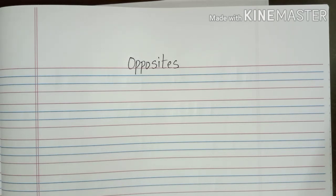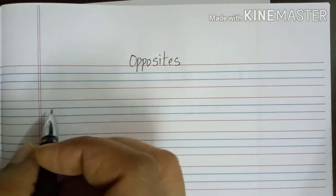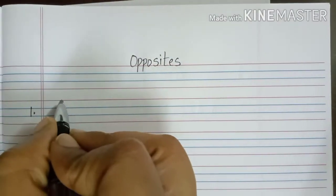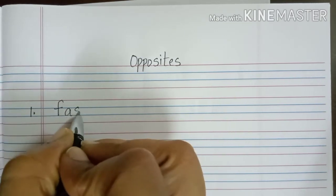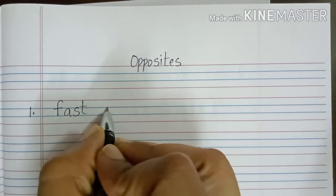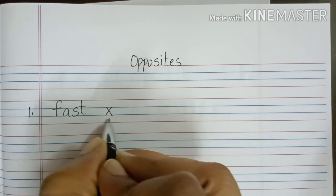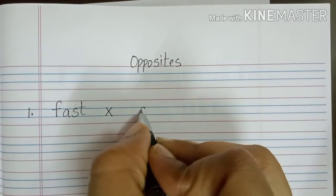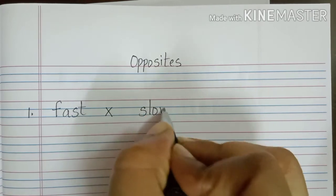Now, let's see few examples. First one will be, F-A-S-T, Fast and we use this sign for opposites. Fast opposite will be, S-L-O-W, Slow.